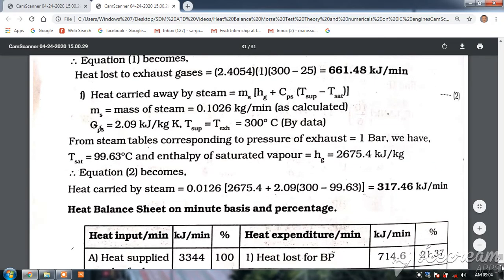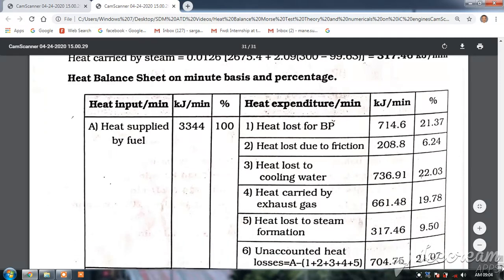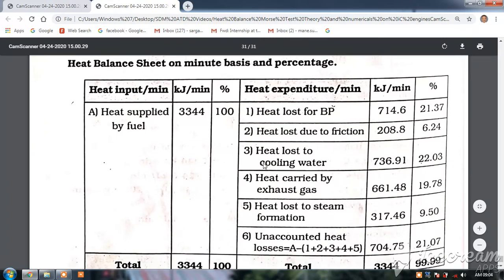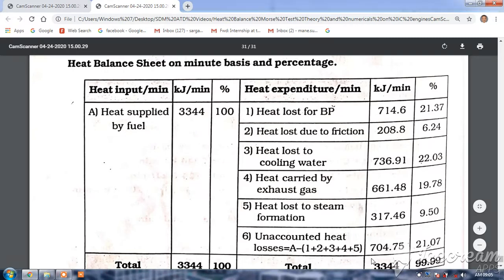Now drawing the heat balance chart on minute basis, heat supplied is 3344 kJ/min, which is 100%. This includes heat loss to brake power, friction, cooling water, exhaust gases, and steam. Unaccounted losses equal 3344 minus all these five components.